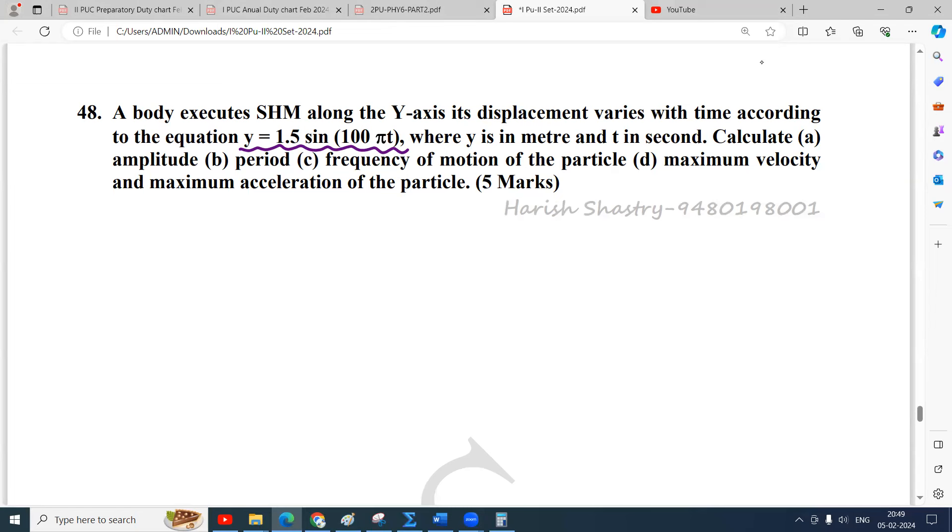Very simple problem. Compare this equation y equals 1.5 sine 100 pi t with the standard equation y equals A sine omega t. When you compare these two, you will get amplitude equal to 1.5 meters, because everything is given in meters. Y is in meters, so you can use the same unit.